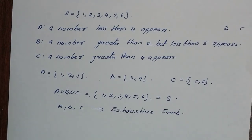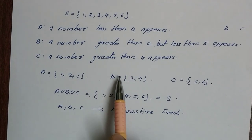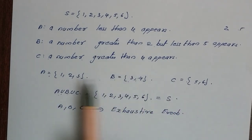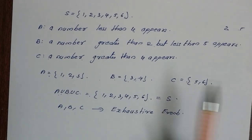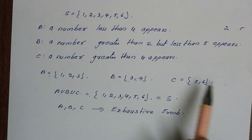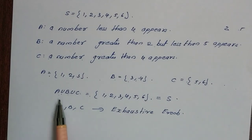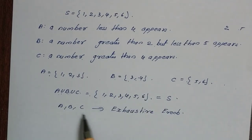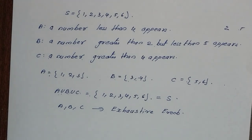So exhaustive events are those whose union equals the sample space. We can use these events as well. Now we have covered this topic and will continue with more problems in the next video.